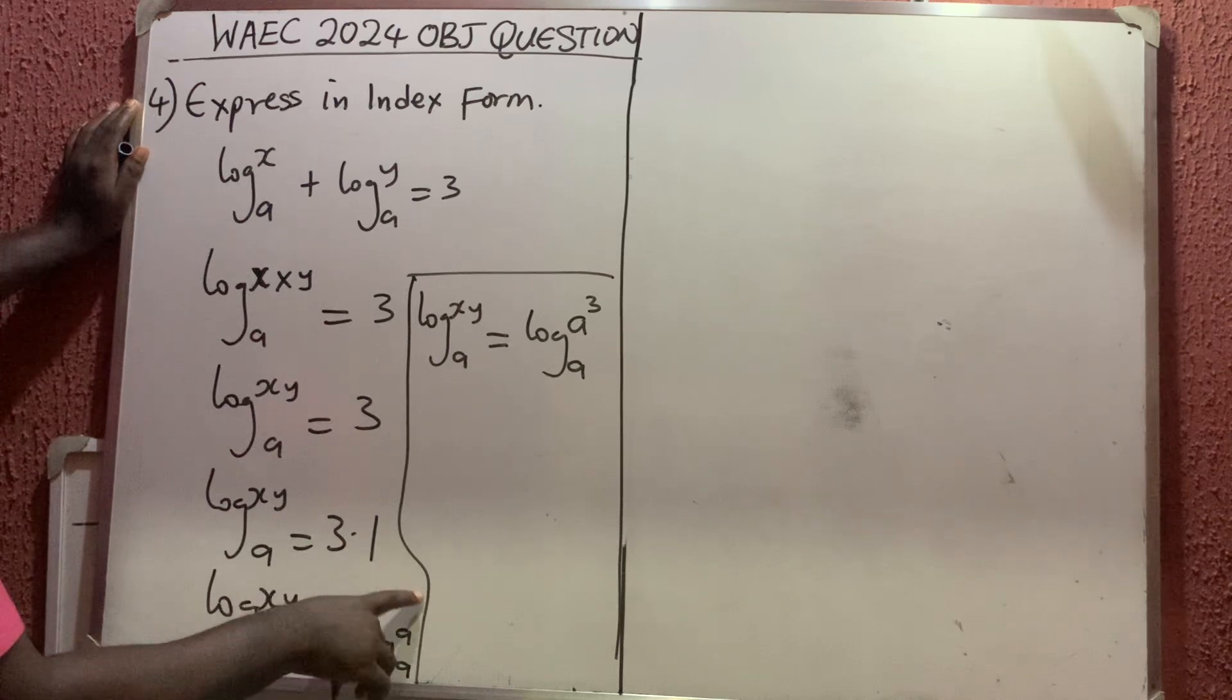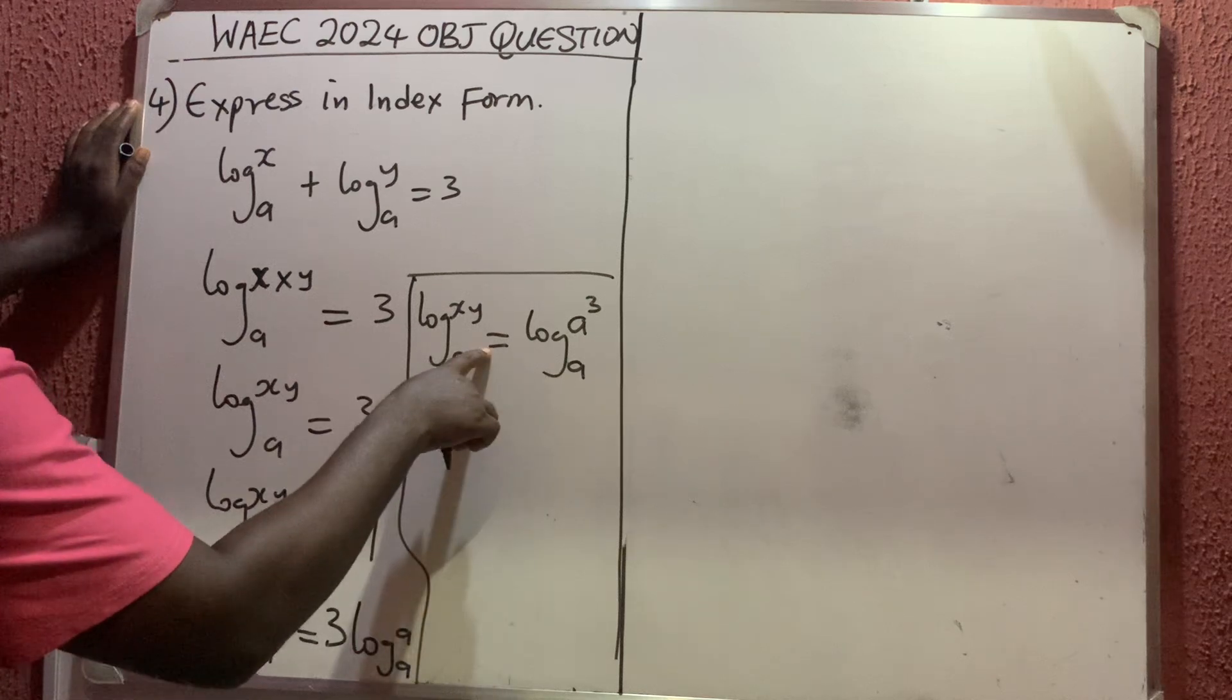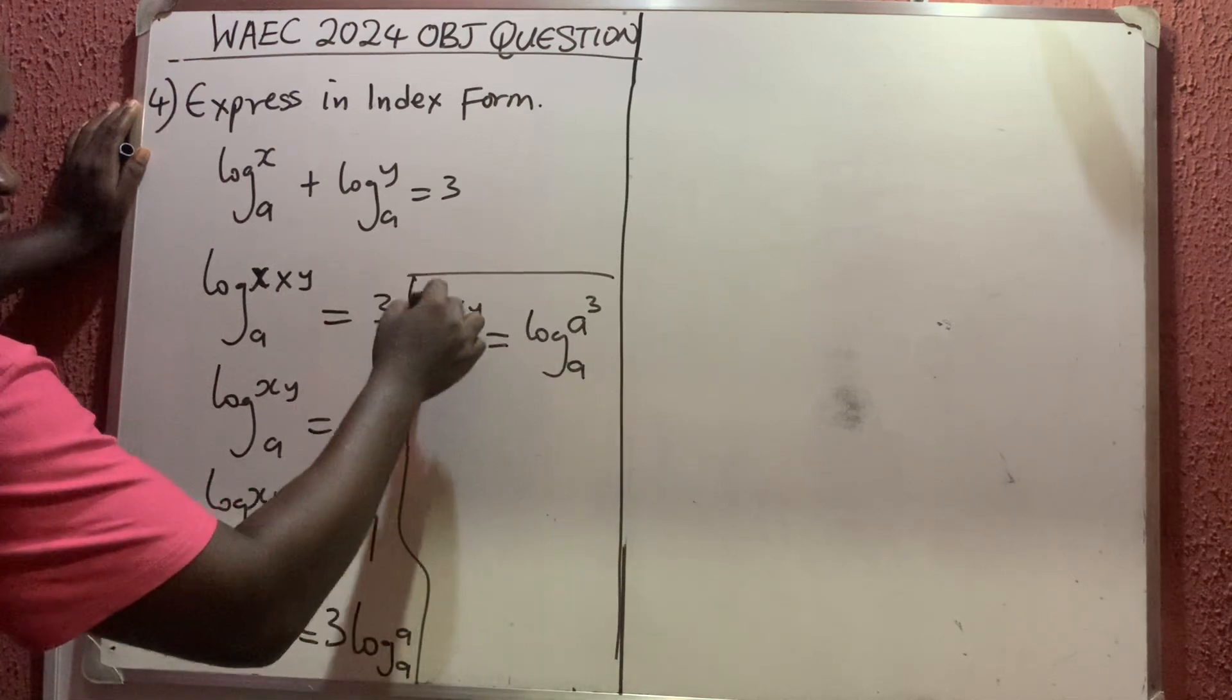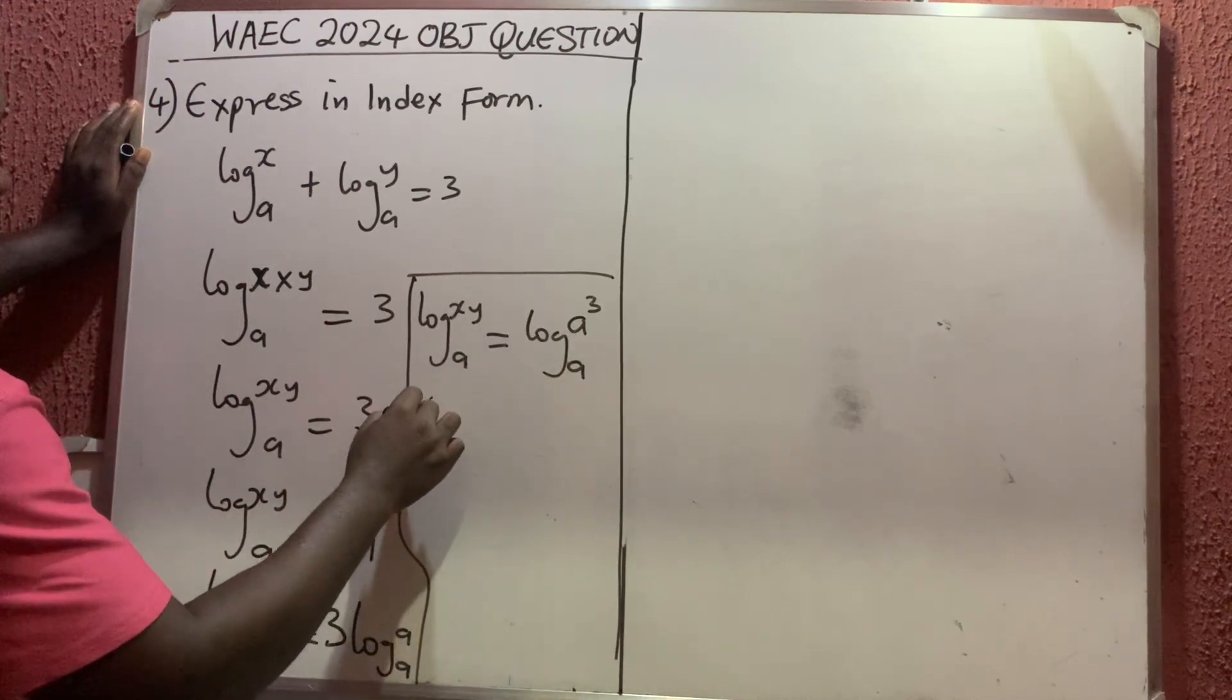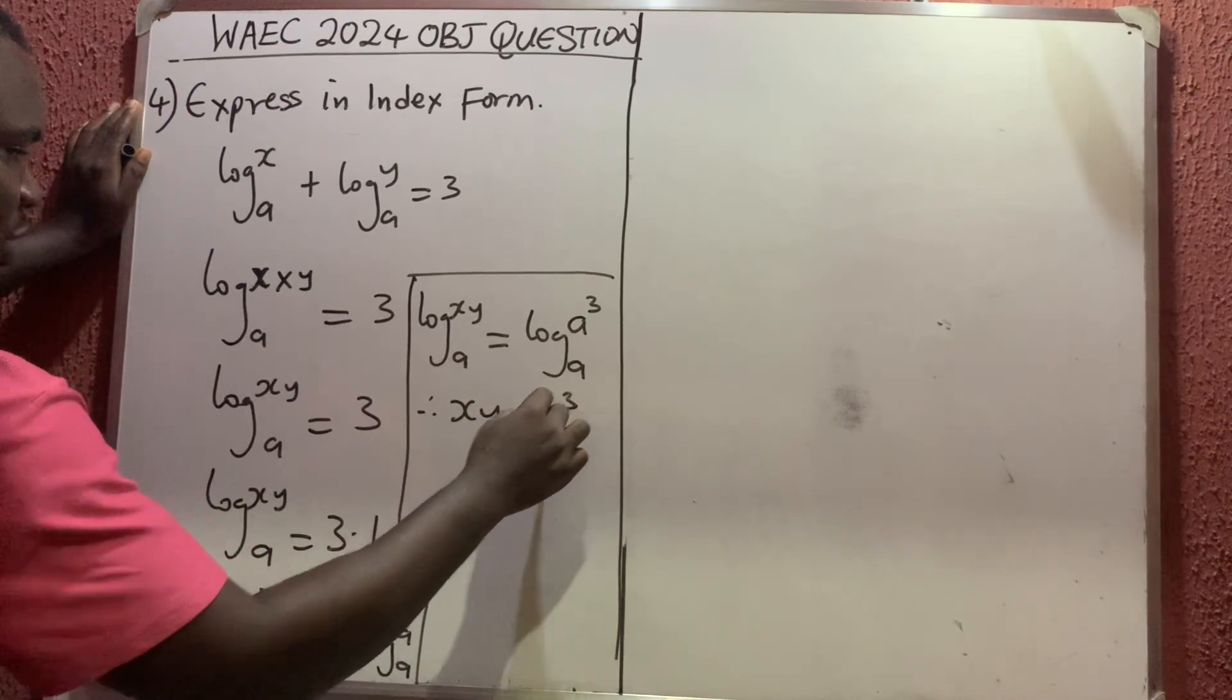Now if the bases are the same thing and you have the equality sign, the log base a will cancel out. Therefore I'm now left with xy equals a raised to power 3. So that is the answer. They say we should express it in index form, and that is it.